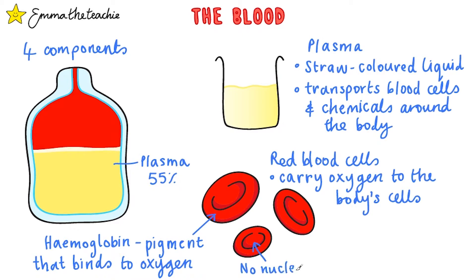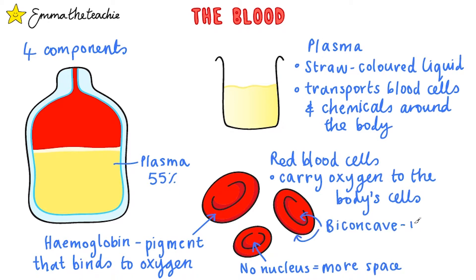Secondly, they have no nucleus. This allows more space for the hemoglobin pigment. Thirdly, they're biconcave, which means they have a dip on each side. This increases their surface area to volume ratio, so they can carry more oxygen.